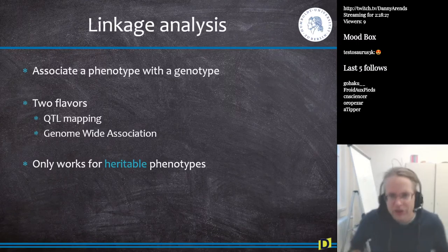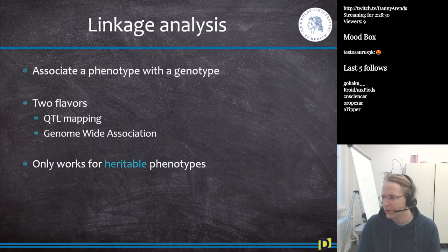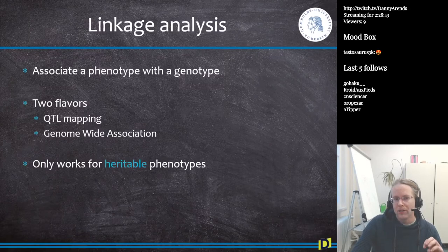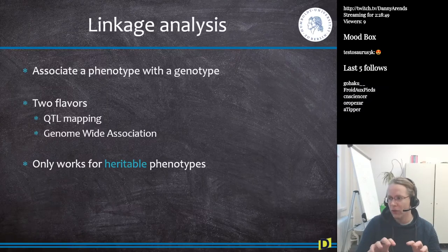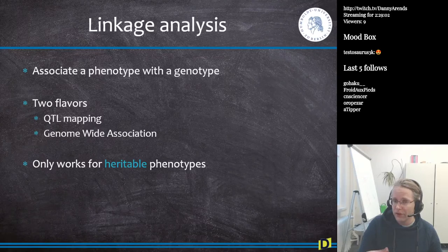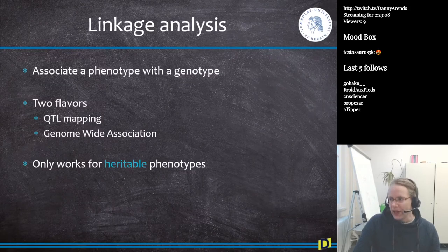Welcome back. In the second part of the lecture I explained how we make crosses - things like a backcross or an F2 cross. Once we have this population, after taking two inbred mice and generating the F1 then crossing F1 individuals back to parental strains, we generate around 50 to 200 mice, each with a unique genome and unique phenotype. We can then do linkage analysis, and the first flavor I'll discuss is QTL mapping.